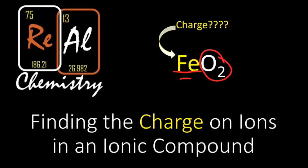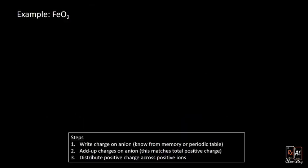This is important when we're going from the formula of an ionic compound to writing the name. So let's do a few practice problems. Let's say we have iron with two oxygens, like we just said. Here's the steps.